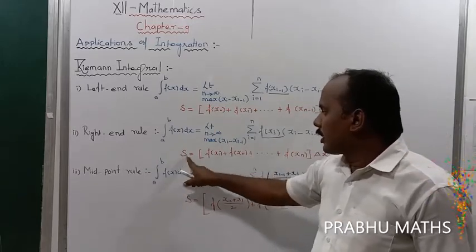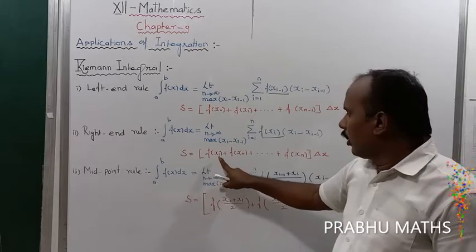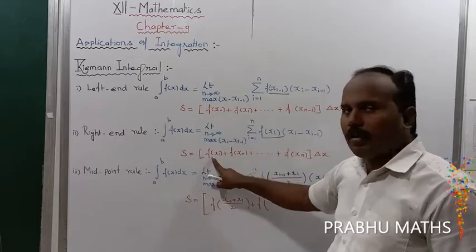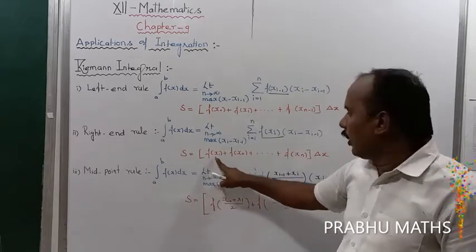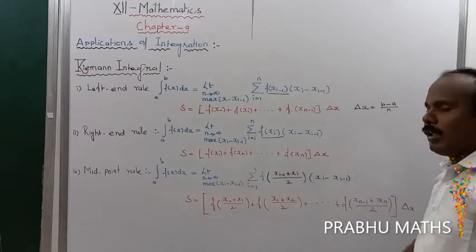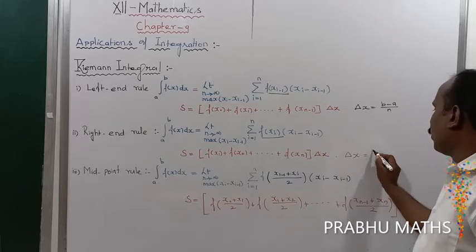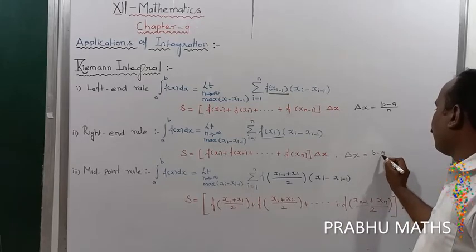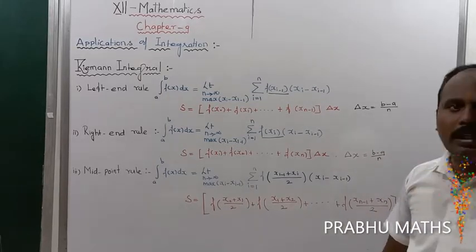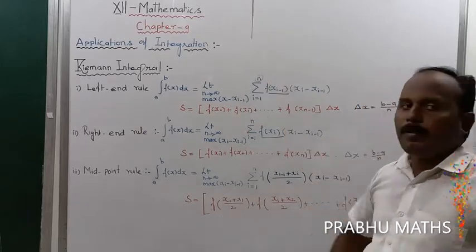For the Right End Rule, S is equal to f(x₀) + f(x₁) + f(x₂) + ... + f(xₙ) times delta x, where delta x equals B minus A divided by N, and N is the total number of elements — that is the limit value.